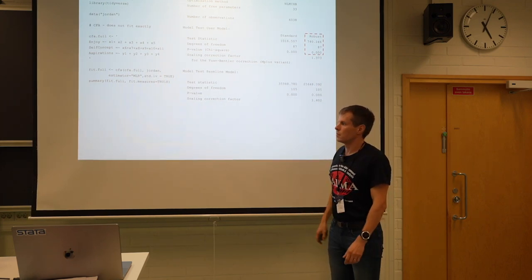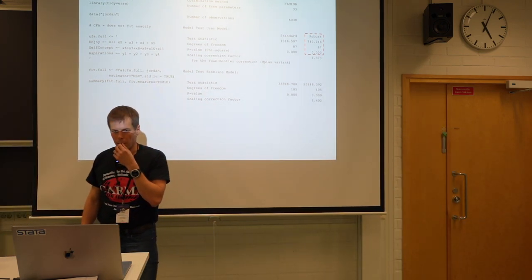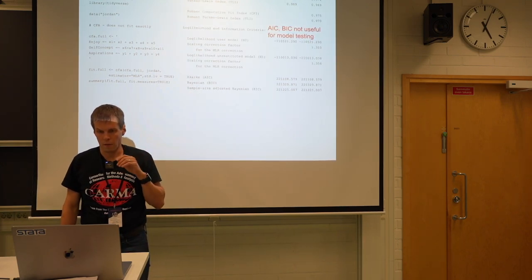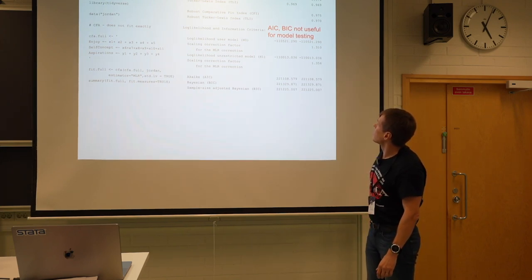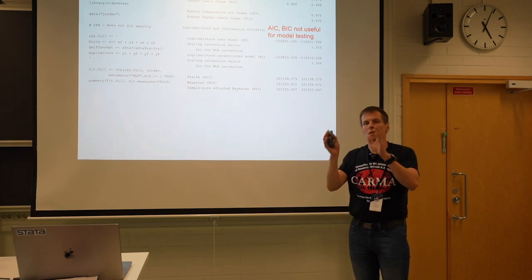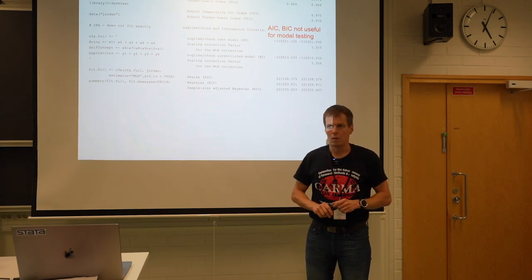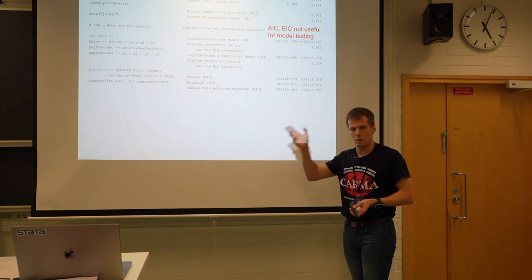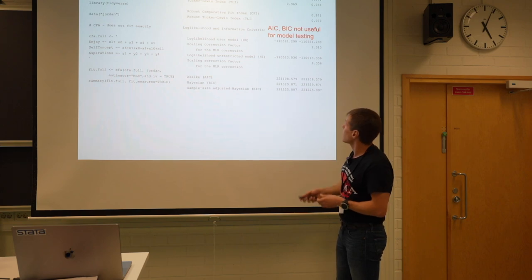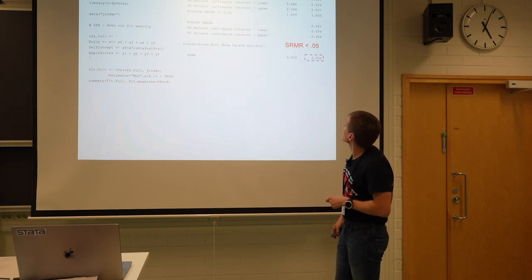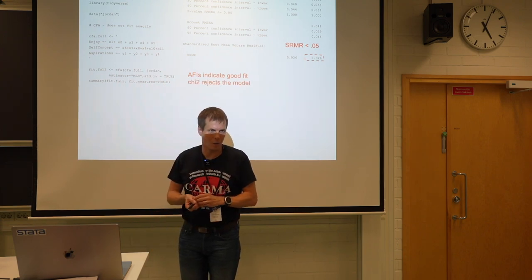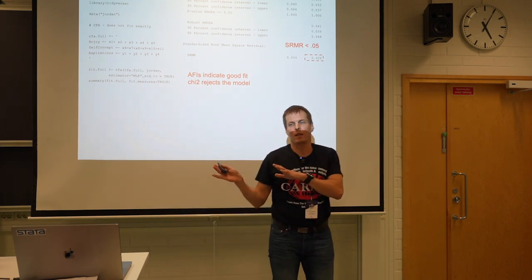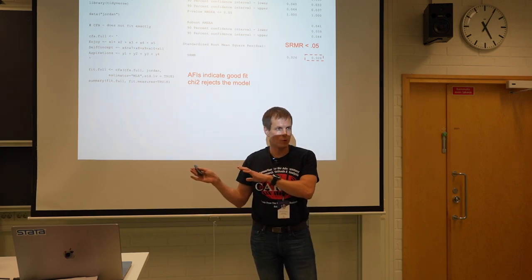The results tell us that the p-value for the model is essentially zero — the model is not correct for the data. Many people, when facing this, look at alternative fit indices: rules of thumb say CFI and TLI must be more than 0.95. Here, CFI and TLI look okay, and RMSEA and SRMR are less than 0.05, so those statistics indicate good fit. But the model test rejects. So now what? Do we ignore the statistic that rejects the model and focus only on the ones that look good?